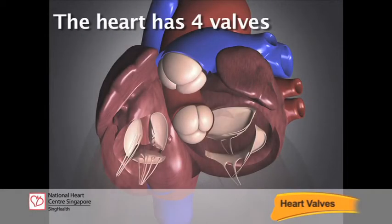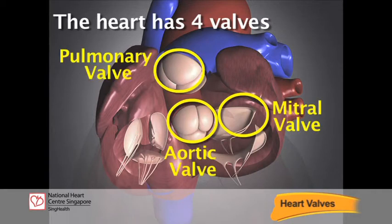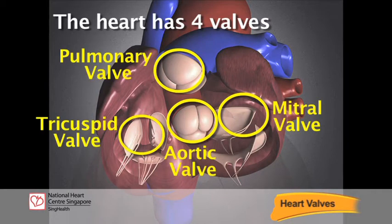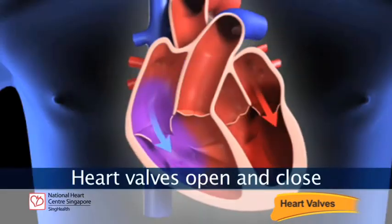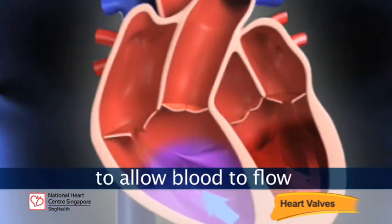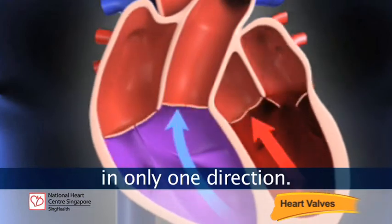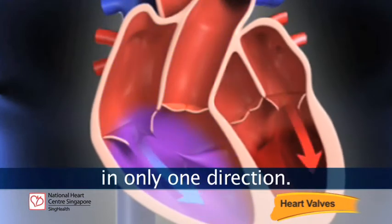The heart has four valves: aortic, mitral, pulmonary, and tricuspid. Heart valves open and close to allow blood to flow in only one direction.